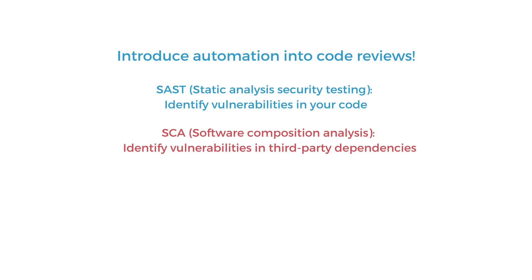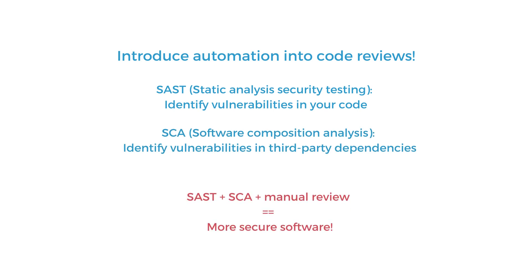These code scanning tools are not 100% accurate. So the best way to build secure software is to use tools to find possible vulnerabilities and automate as much of the process as possible, then conduct a manual code review to validate the results the tools return. This way, you can ensure that as few bugs as possible make it into production.